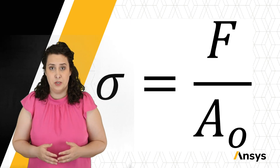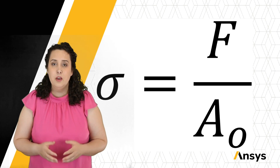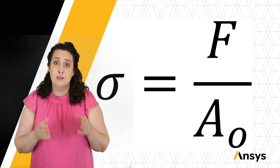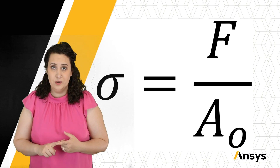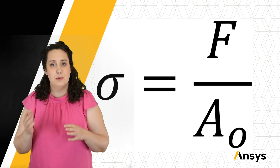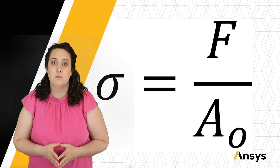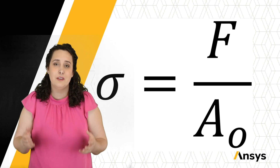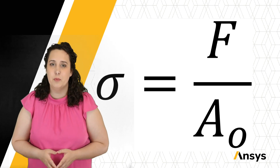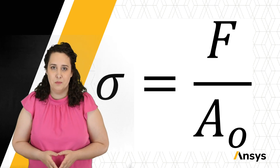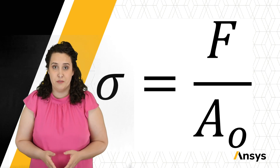If my stone bridge is to be able to withstand the same force and have the same deflection as my steel bridge, based on my Young's modulus, I'll have to have a significantly larger cross-sectional area from my pieces of stone. This is part of the reason that our bridges look different.